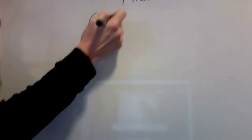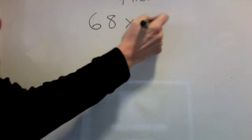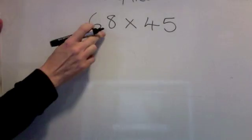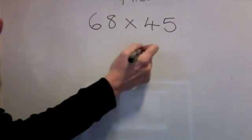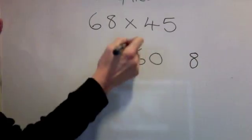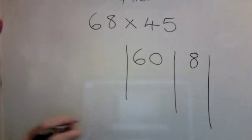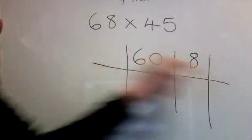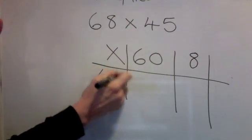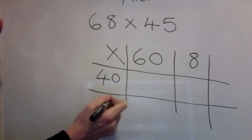Let's try that again. 68 times 45. I'll break this number down into 60 and 8. There's my grid. And I'm going to times it by 40 and 5.